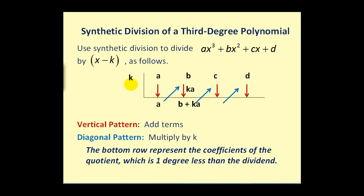To perform synthetic division, we start by bringing the a value down, then multiply by k and put it in the next column. Multiply by k on the diagonal, add down, and continue. The vertical pattern in red is to add and the diagonal pattern in blue is to multiply by k. The bottom row represents the coefficients of the quotient, which is one degree less than the dividend. So since this is degree three divided by degree one, our quotient would be degree two.